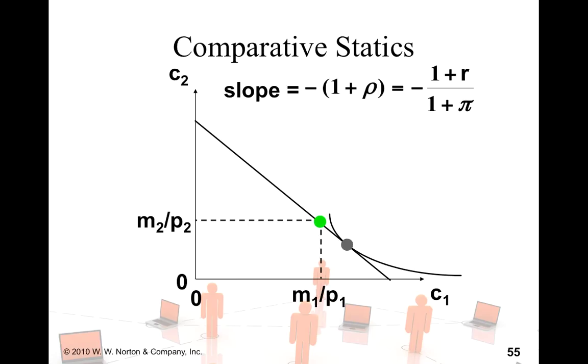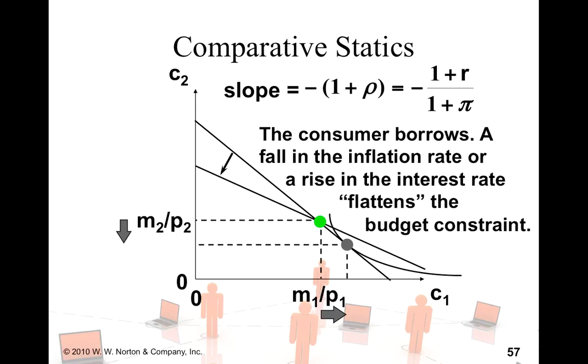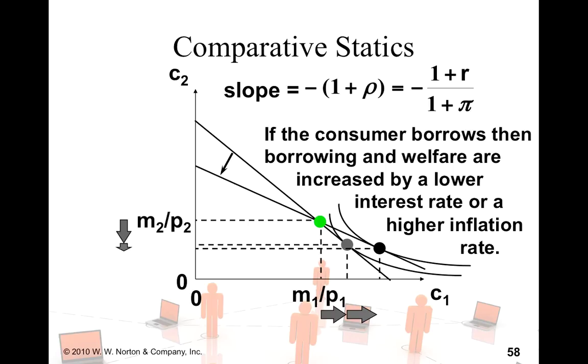On the other hand, let's talk about the borrower. Now, this consumer is borrowing. Let's say that the inflation rate falls and interest rate rises. So, it flattens the budget constraint again. If the budget constraint becomes flat, then the consumer basically can be better off because he can borrow at a lower interest rate or a higher inflation rate.